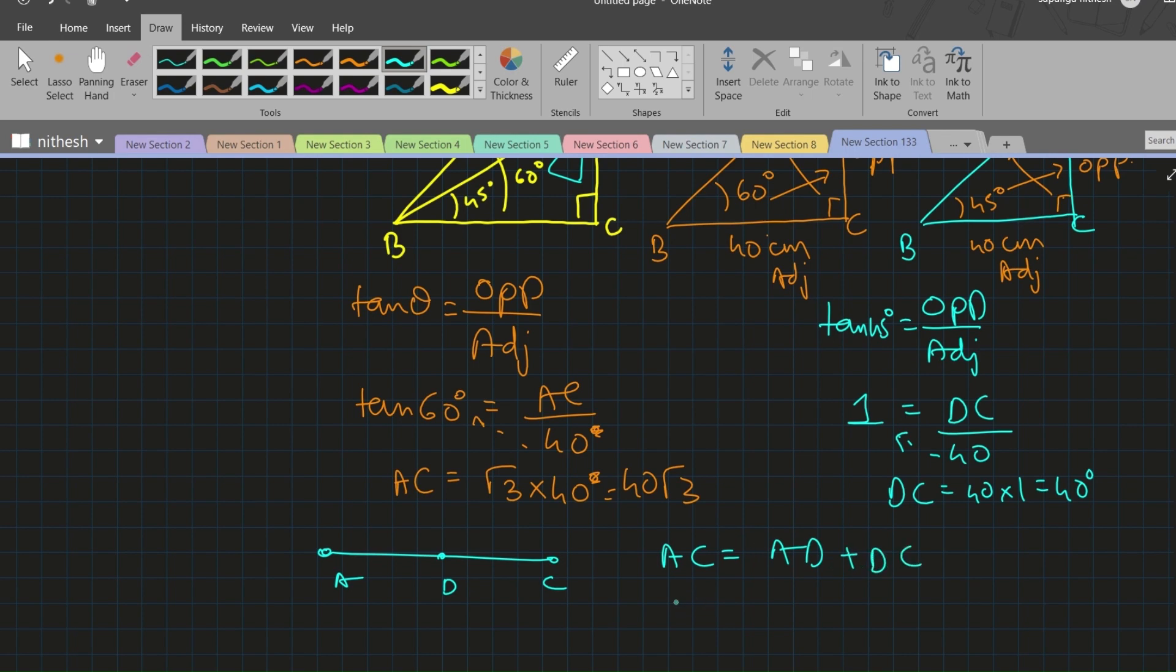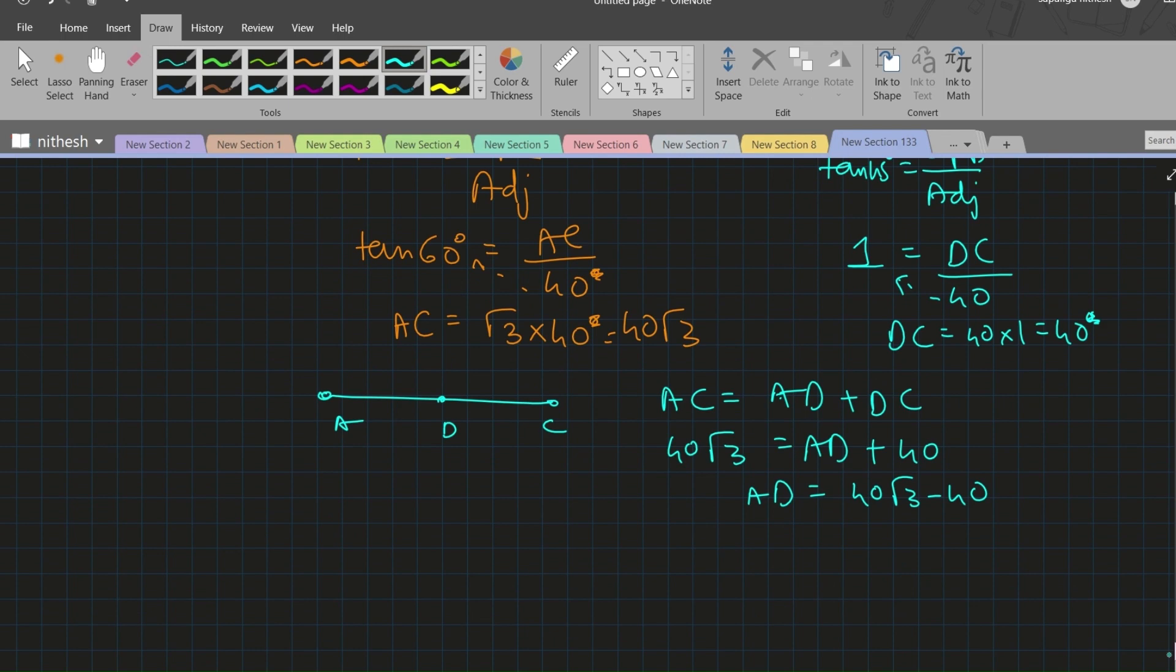When we substitute the values, 40√3 equals AD plus 40. AD is equal to 40√3 minus 40. Taking 40 common, you get AD = 40(√3 - 1).